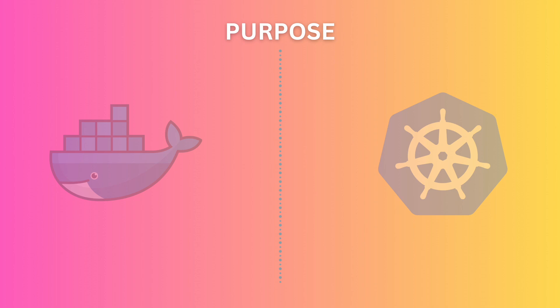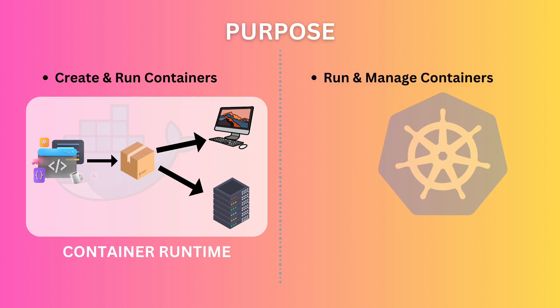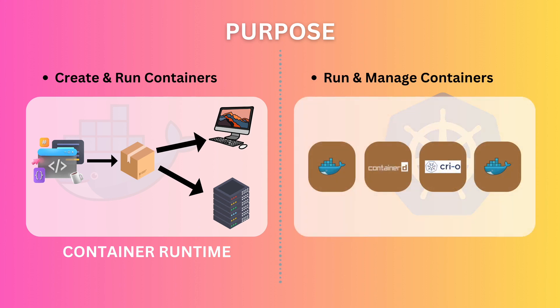Now let's compare Docker and Kubernetes after I just told you that it's wrong to do so. Docker is a technology to create and run containers. It allows you to take your application and put it into a package that can be run on any computer reliably and in an isolated environment. So Docker is a container runtime. Kubernetes is a platform to run and manage containers at scale. You can use it to run Docker containers or even other runtimes such as containerd. In other words, Kubernetes is a container orchestrator.